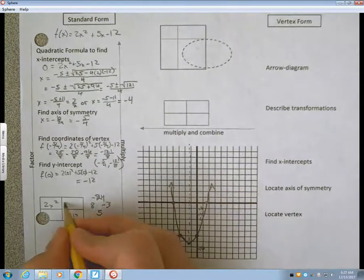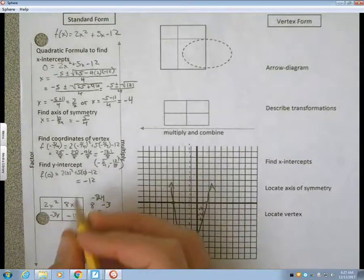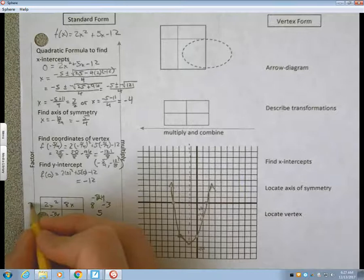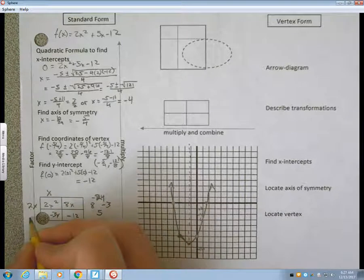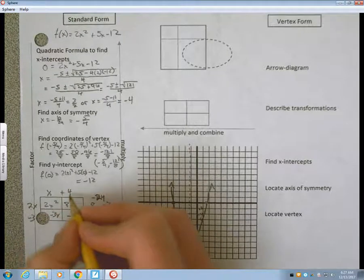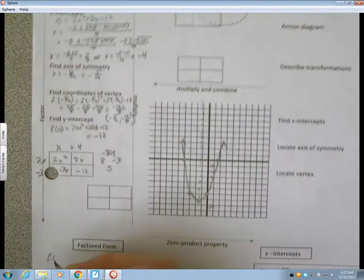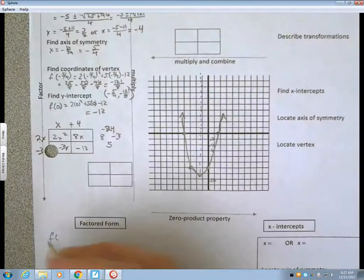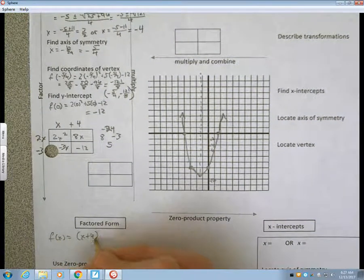An 8 and a negative 3 will do that. So, I'll load an 8x and a negative 3x in here. Greatest common factor this way is a 2x, which means that has to be an x. This has to be a negative 3. This has to be a plus 4, and that checks out to give me that. So, my factored form down here is f of x equals x plus 4 times 2x minus 3.